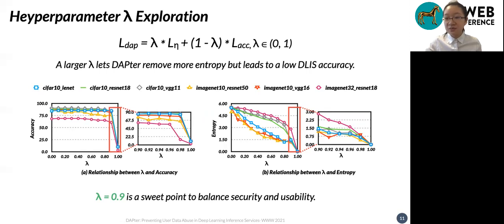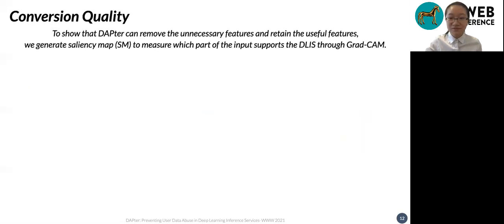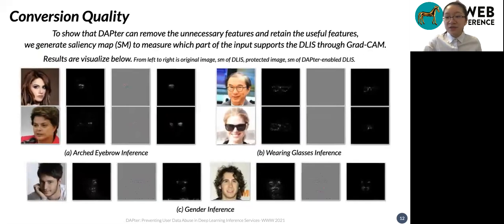We analyze the effectiveness of the entropy term via the silencing map. The silencing map is a visualized map in which pixels of an image that are highly relevant to the inference accuracy of a targeted deep learning model are highlighted. We show that the data converter removes information unrelated to the targeted task and retains the useful information. Performing silencing analysis on both the vanilla and DAPTOR-enabled deep learning inference services, we can see that the silencing maps generated before and after protection have high similarity — meaning data protection does not change the operation logic of the targeted deep learning model.